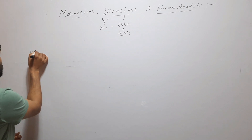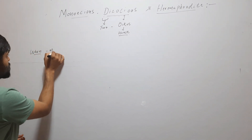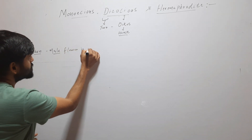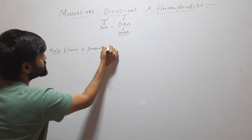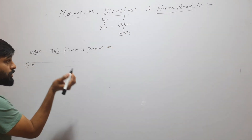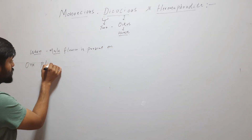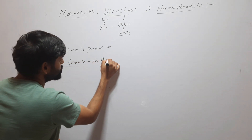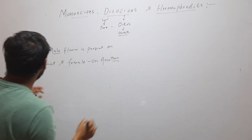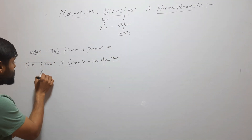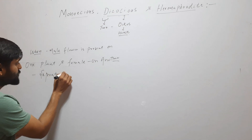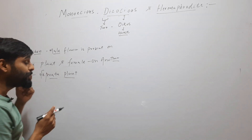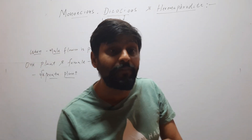When male flower is present on one plant and female on another plant — means male flower and female flower are present on separate plants. Different plants, two houses, different houses means the place for male flower and female flower is different.